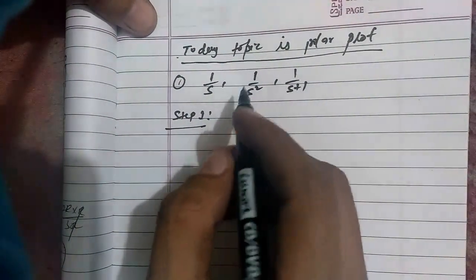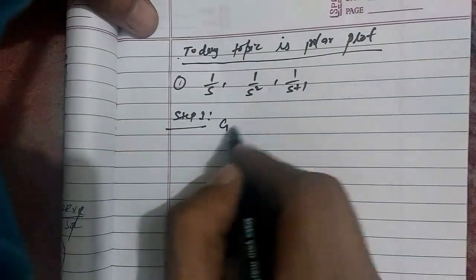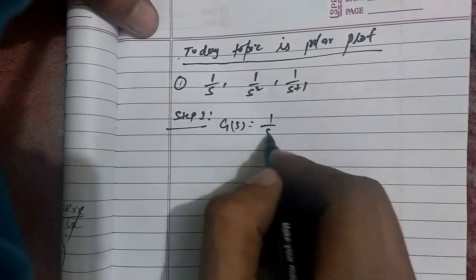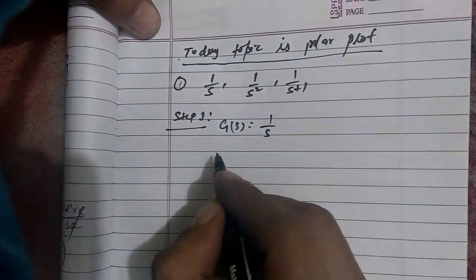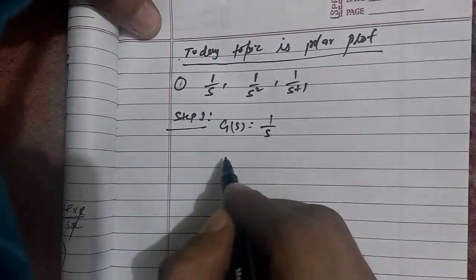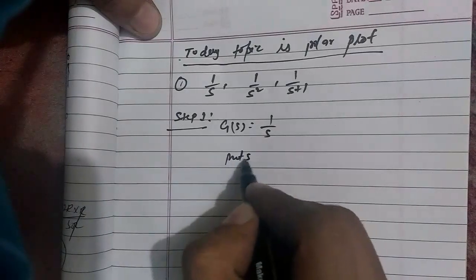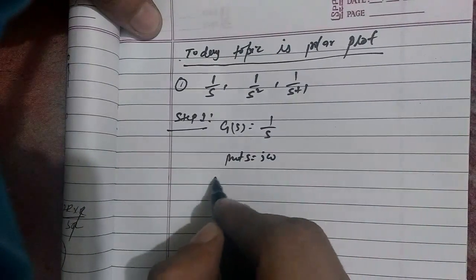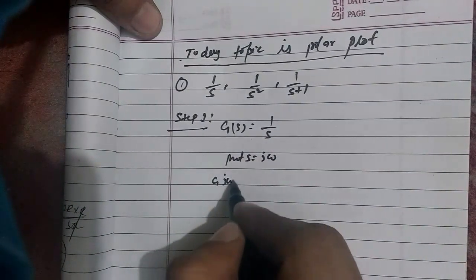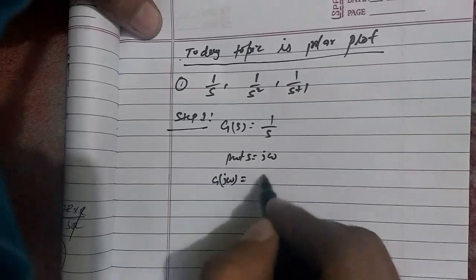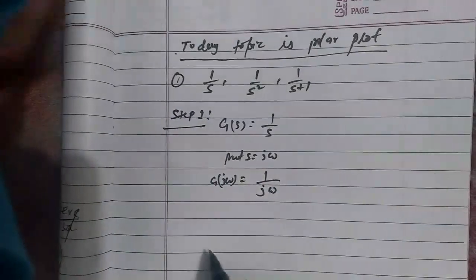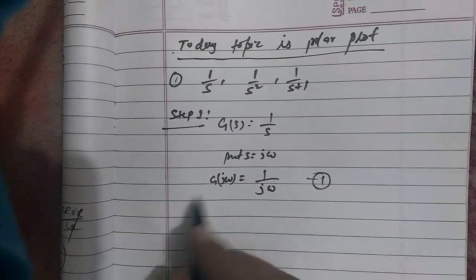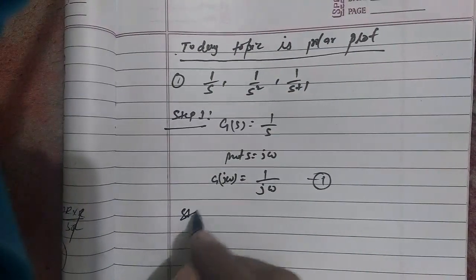Step 1: we take G(s) as the transfer function — for example, 1/s. We put s equal to jω, and G(jω) becomes 1 divided by jω. This is equation number one.